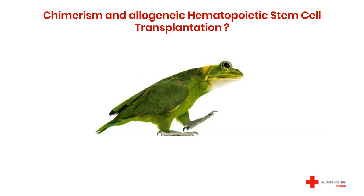I would like to shortly explain why we use the word chimerism for patients after hematopoietic stem cell transplantation. Like a well-known animal in Switzerland, a patient after any allogenic transplantation is in fact a chimera — composed of cells originating from different organisms. In our case, the body of the patient is made of his own cells apart from his hematopoietic system, which should be produced by the transplanted donor stem cells in the best case scenario. In the rest of this presentation, the acronym HSCT will be used instead of hematopoietic stem cell transplantation.